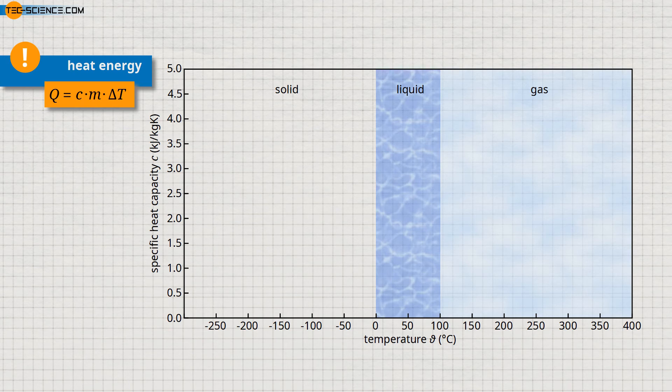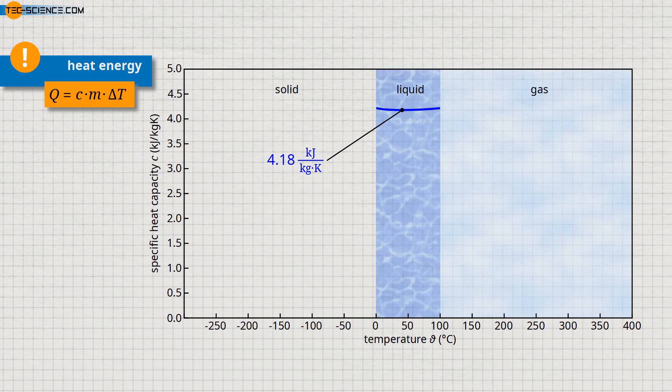In the following, let's take a closer look at the specific heat capacity of water. Strictly speaking, this value is not a constant quantity, but depends to a greater or lesser extent on the temperature. For liquid water, the diagram shows the dependence of the specific heat capacity on the temperature. The minimum value of the specific heat capacity of liquid water is about 4.18 at a temperature of 40 degrees Celsius, and the maximum value is about 4.22 at a temperature of 0 degrees Celsius.